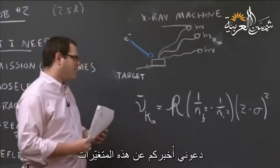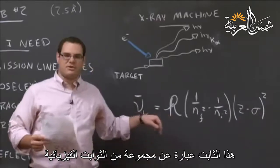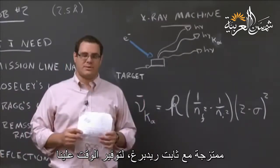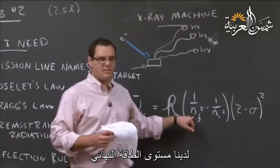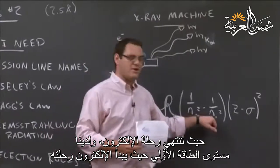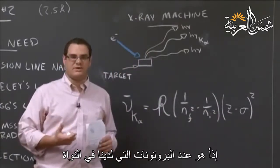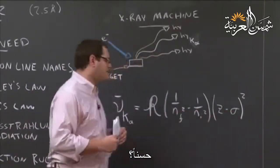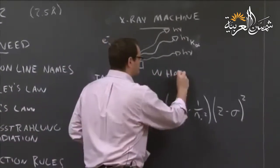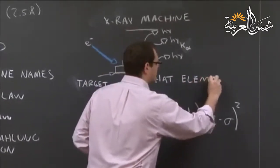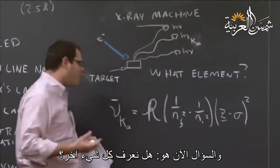Moseley's Law basically tells us — let me go through these variables. We have the wave number. We have a Rydberg constant — that's a bunch of physical constants agglomerated into one big one. We have the final energy level where the electron ends, and the initial energy level where it begins. And then we have Z, which designates our element — the number of protons in the nucleus. And then we have sigma.